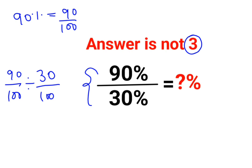Now, in order to do division, you have to follow the rule of KACF, where K stands for keeping the first number as it is, C stands for changing the division sign to multiplication, and F stands for flipping or taking reciprocal of 30 upon 100, which is 100 upon 30.